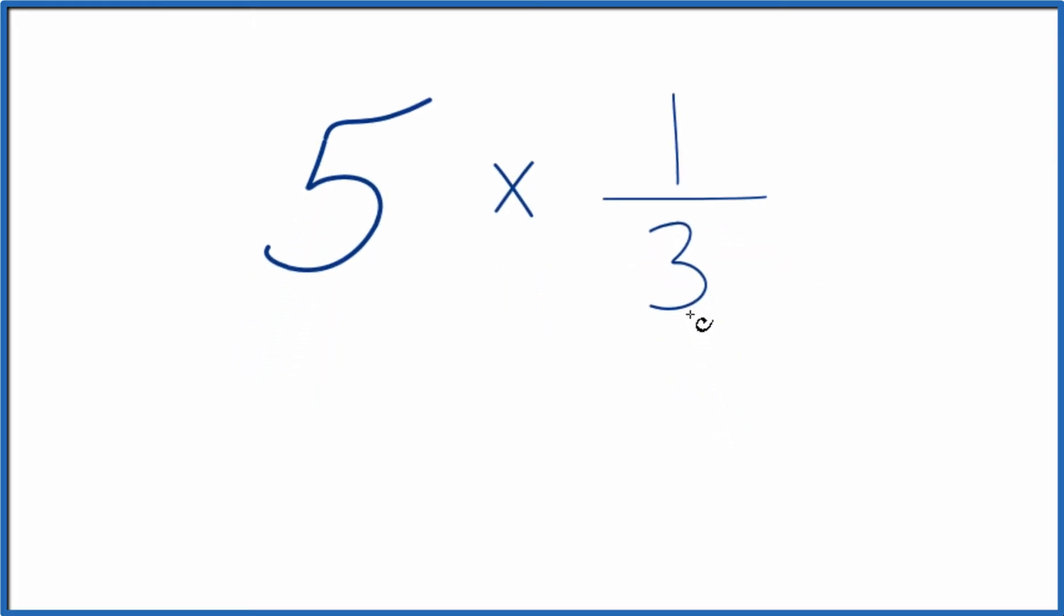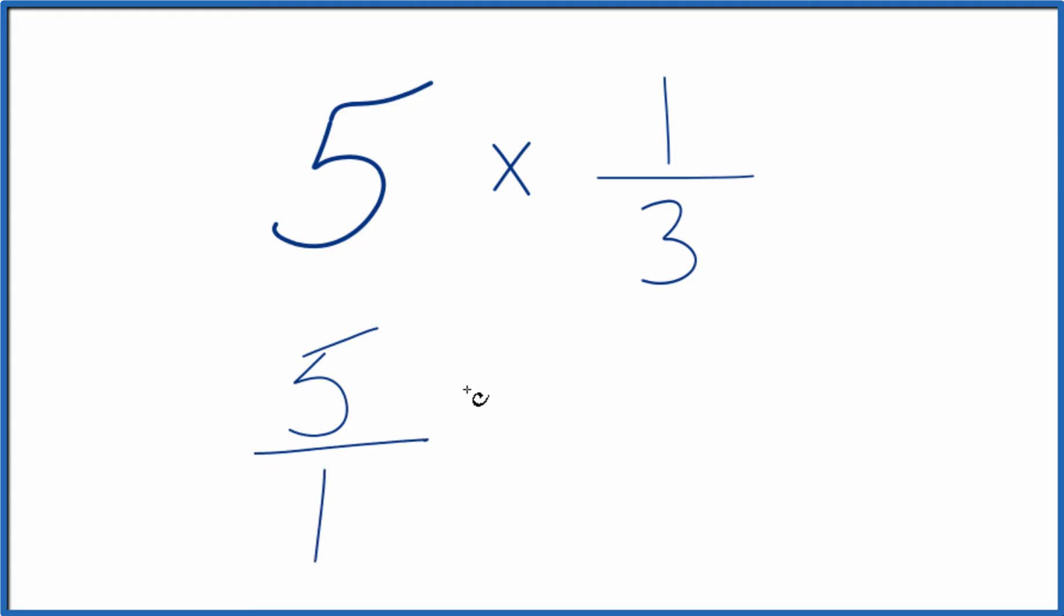Probably a little bit easier would be to think of it this way. We could consider 5 to be 5 over 1. Still 5, we're just dividing by 1, but this gives us a fraction.